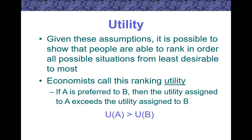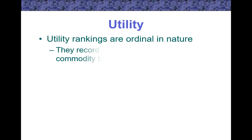U(A) greater than U(B). Utility rankings are ordinal in nature. They record the relative desirability of commodity bundles.